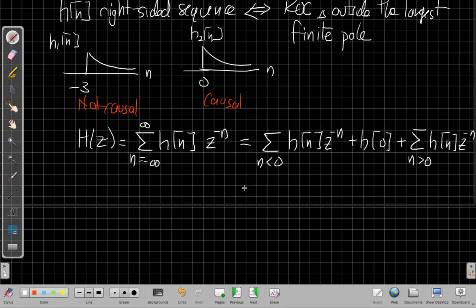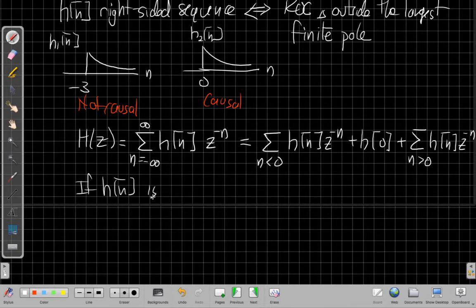Well, if the system is causal, h of n is zero for this whole first sum and it goes away. So if h of n is causal, if the system is causal, then the limit as z goes to infinity will have h of zero. And then as z goes to infinity, remember, these are all like one over z to the n. So as z is getting really big, these terms are vanishing. That's sometimes called the initial value theorem. That as z goes to infinity, the limit of h of z will be h of zero.